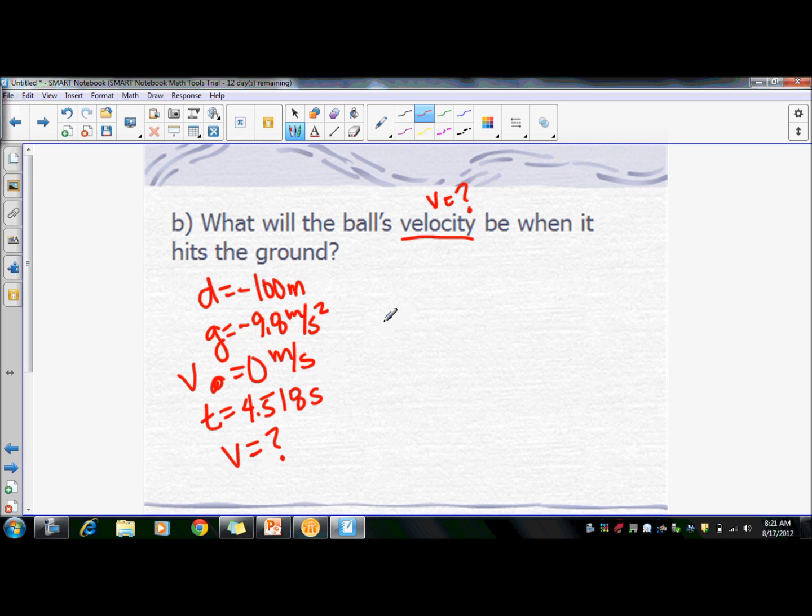So we can use any equation that has V in it, since we have four givens. So why don't we use what a lot of people consider to be the easy one. So V equals V naught plus AT. So V equals zero plus negative 9.8 times 4.518 gives you a V of 44.27 meters per second.